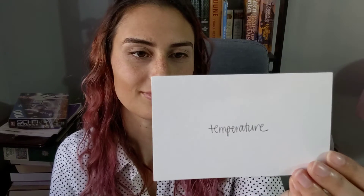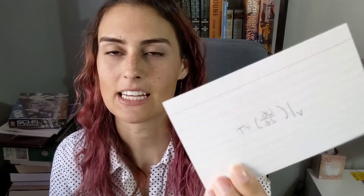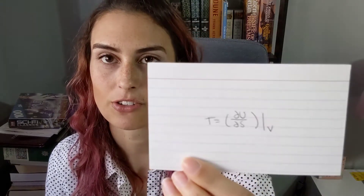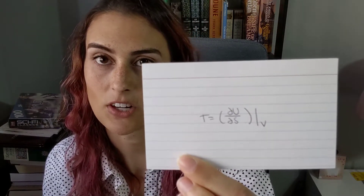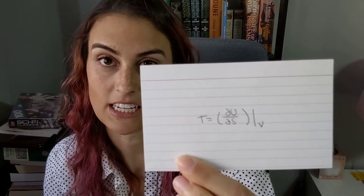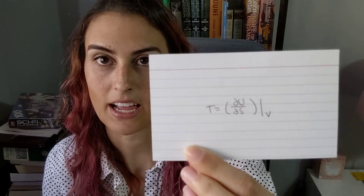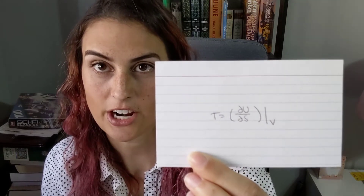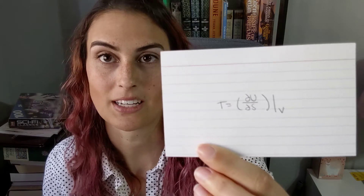Temperature T is defined as the partial derivative of U with respect to S at constant V, where U is the internal energy, S is the entropy, and V is the volume. You'll see these come up a lot.